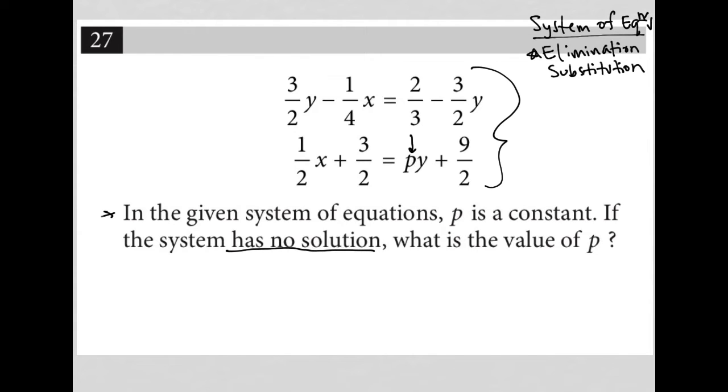So what does it mean for a system to have no solution? It means that both X and Y eliminate when we're using the process of elimination for solving our system of equations. And the remaining, which is just the numbers that remain, is not true.